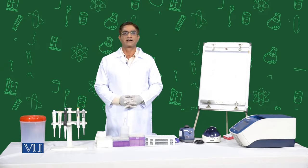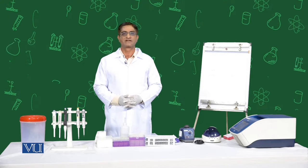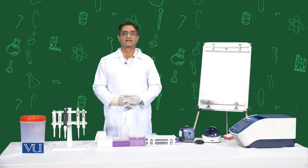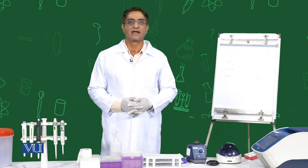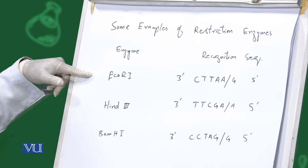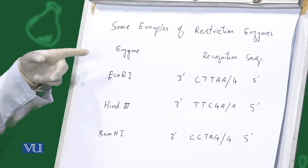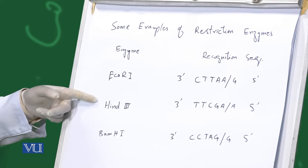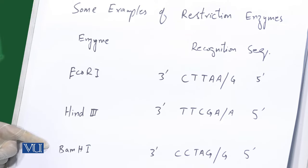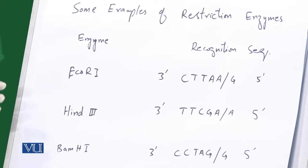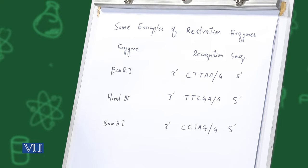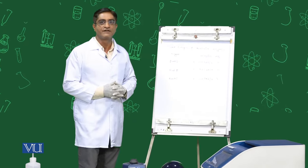Now we will discuss the principle of RFLP. There are certain enzymes called restriction enzymes which cut DNA molecules at different sites called recognition sites. Commonly used restriction enzymes and their recognition sites include EcoR1, which cuts at GAATTC; HindIII, which cuts at TTCGA; and BamH1. These enzymes recognize and cut the DNA at these specific recognition sites — this is the principle of RFLP.